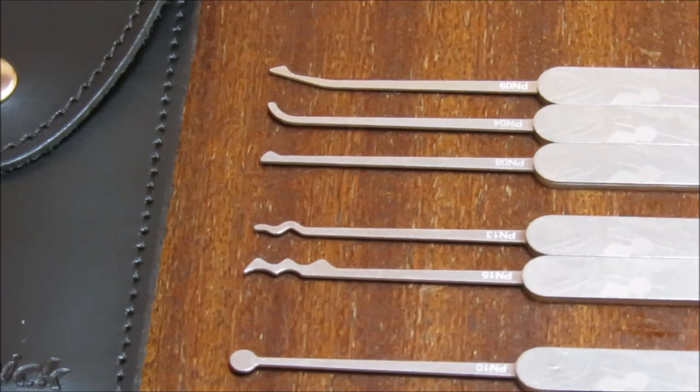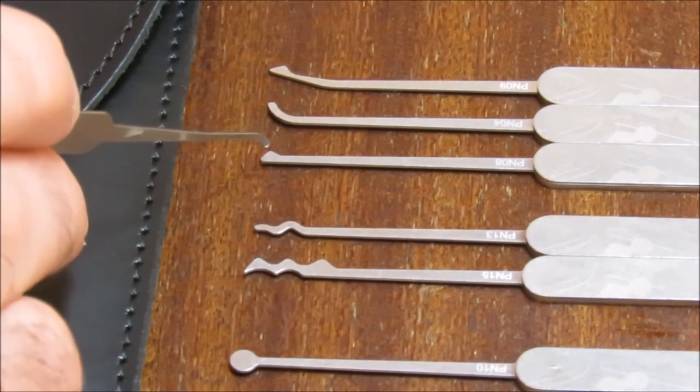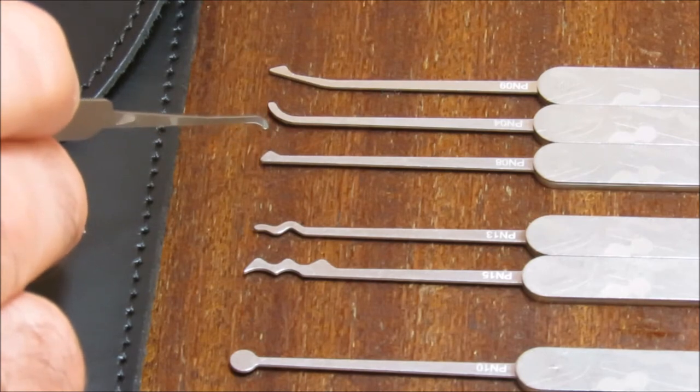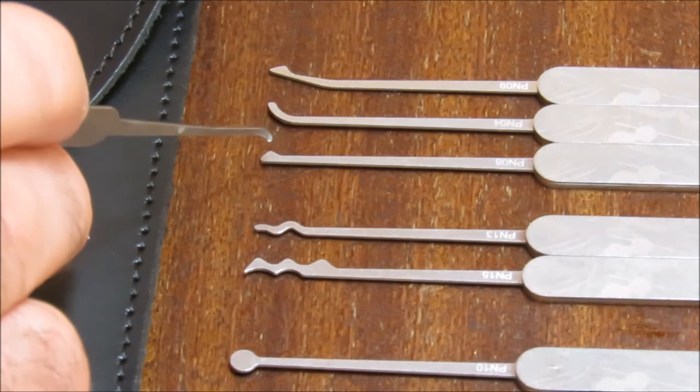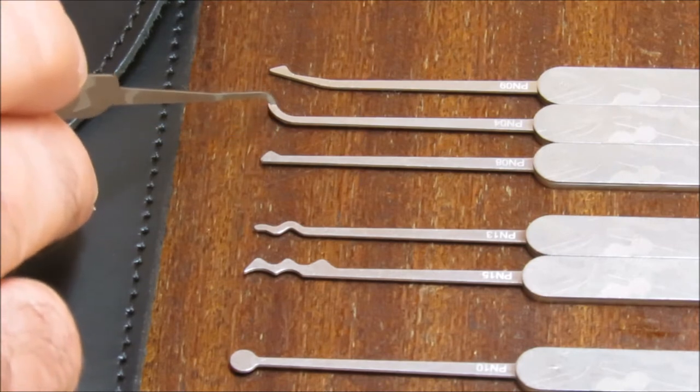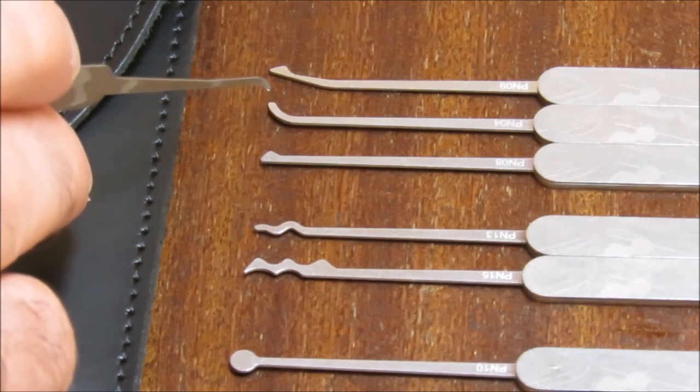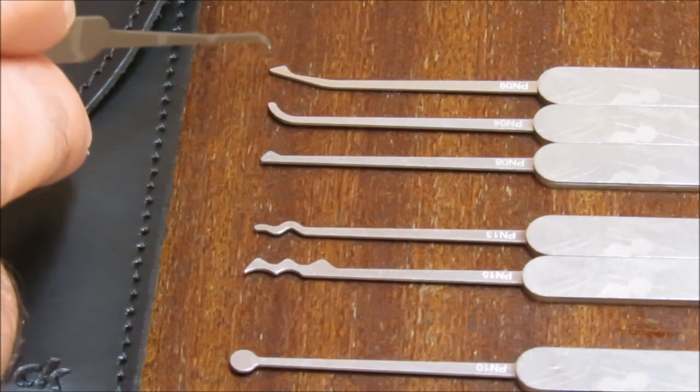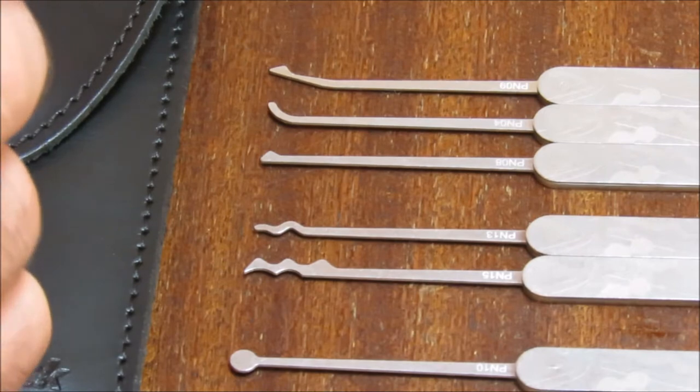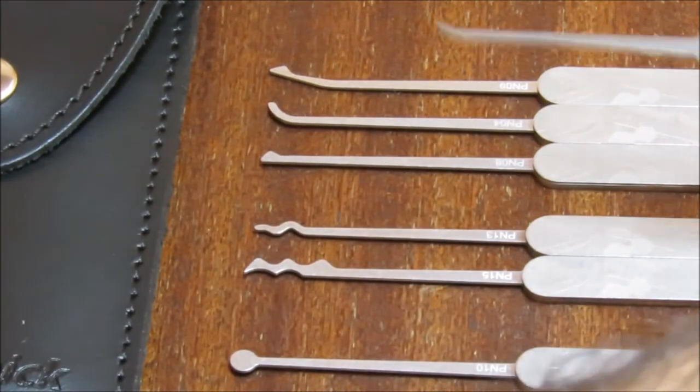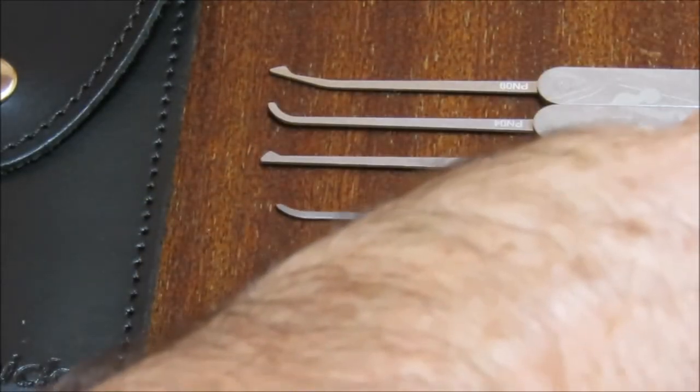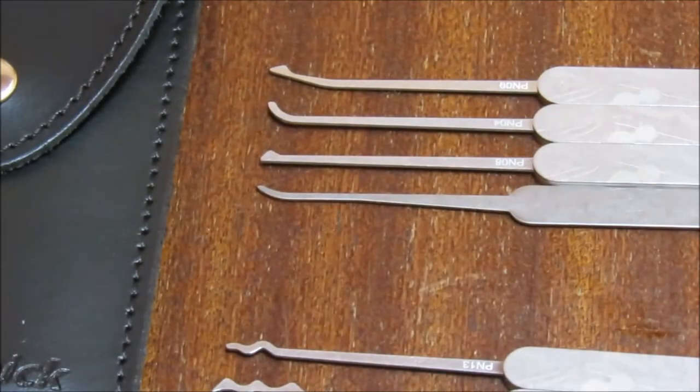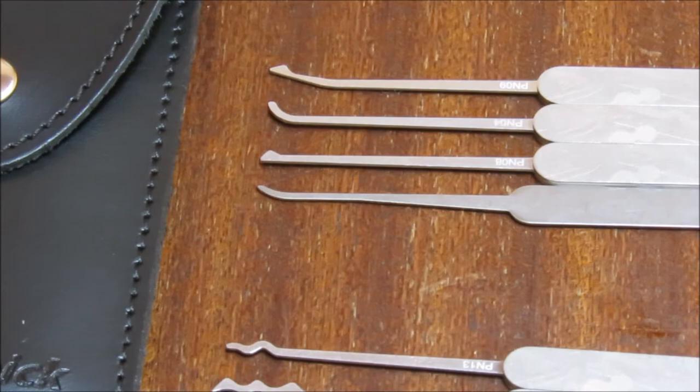So what they have given you is a half diamond and the idea is that that is going to be your mainstay single pin pick. They have given you a steep hook for dealing with difficult bitting and they have given you a DeForest diamond if you prefer that style of picking. So what they don't have is an equivalent to, and I'm just going to put my Sparrows short hook in there so you can see, they don't have an equivalent to the Sparrows short hook.